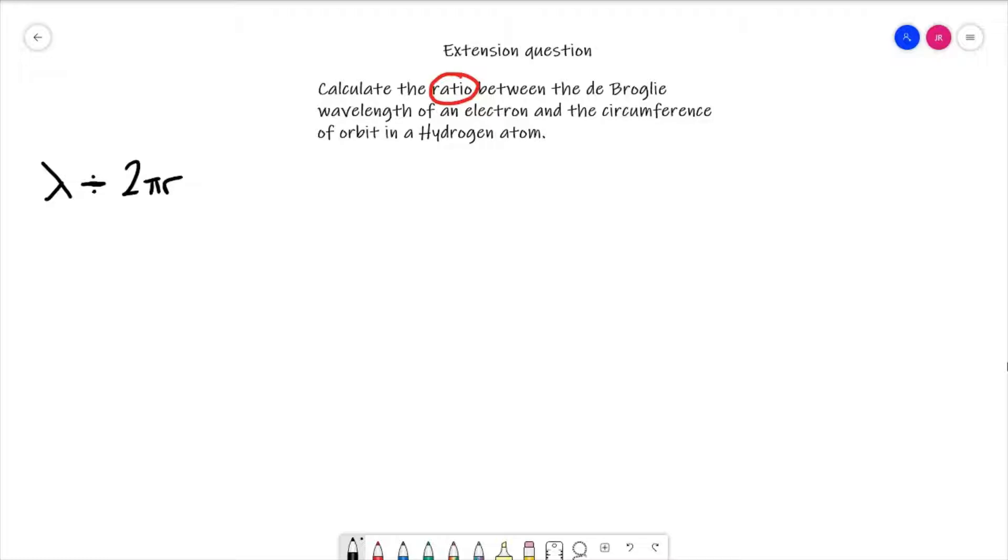The word ratio we take to mean divided by. So when we're looking at the ratio between two different things we're looking at one thing divided by the other. Here it's the de Broglie wavelength divided by the circumference. Now if we write that better, lambda over 2πr is exactly how we should be writing this idea of ratio.